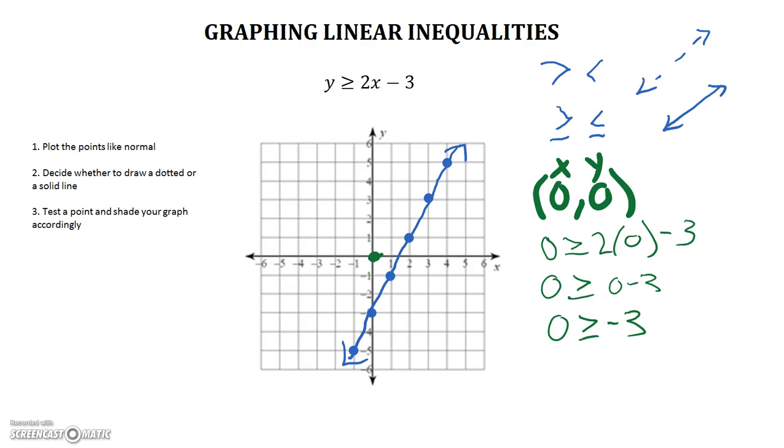Now here is a part that's extremely important. This statement here, 0 is greater than or equal to negative 3, is that true or false? That is a true statement. So because that's a true statement, that means that our point 0, 0 works. So we're shading that side of our graph. Which means that if we tested any other point on our graph on that side, that would work also. Those are called our solutions. So 0, 0 is a solution to our inequality.